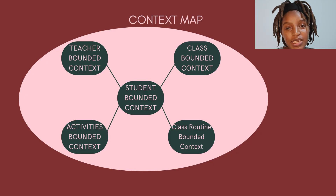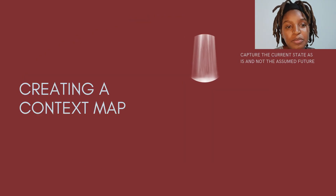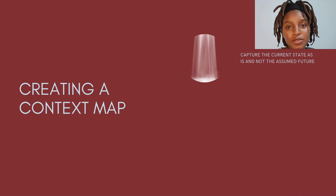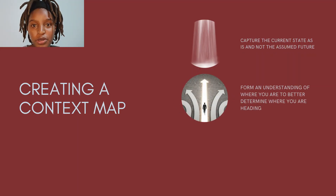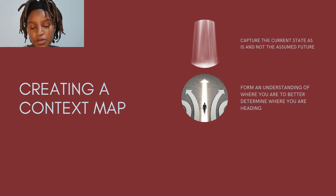Let's look at creating a context map. What do we need to know? We need to capture the current state — as-is — and not the assumed future. It's easy to get a perceived notion of where we should be, but don't fall for that trap. Try as much as possible to work with what you have as-is, and form an understanding of where you are so you're better able to determine where you're heading.